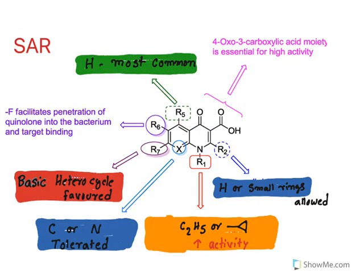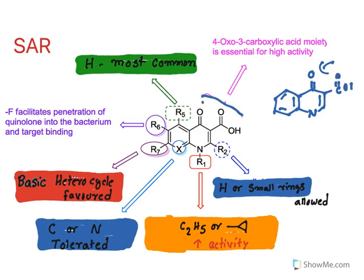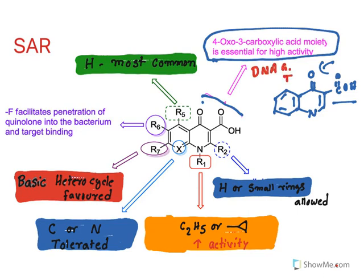Let us get a common idea about SAR. The general quinoline ring, when you attach a ketone group, becomes quinolone. The combination of the 4-oxo and 3-carboxylic acid moiety is essential for high activity. The reason is the mechanism of action — these drugs bind with bacterial DNA enzymes like DNA gyrase and DNA topoisomerase. To bind with that enzyme, this structural pattern is required. Hence, this becomes the pharmacophore — all drugs must contain this combination for their mechanism of action.